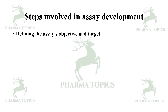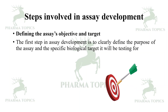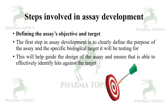Let us see the steps in assay development. First, you have to define the assay's objective and its target. The first step is to clearly define the purpose of the assay and the specific biological target it will be tested for. This will help guide the design of the assay and ensure it is able to effectively identify hits against the specified target.